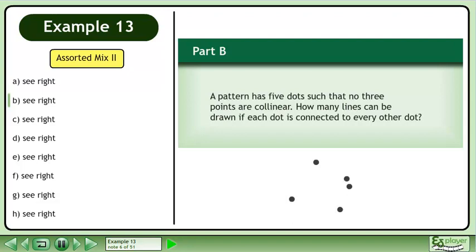Now we'll move on to part B. A pattern has five dots, such that no three points are collinear. How many lines can be drawn if each dot is connected to every other dot?